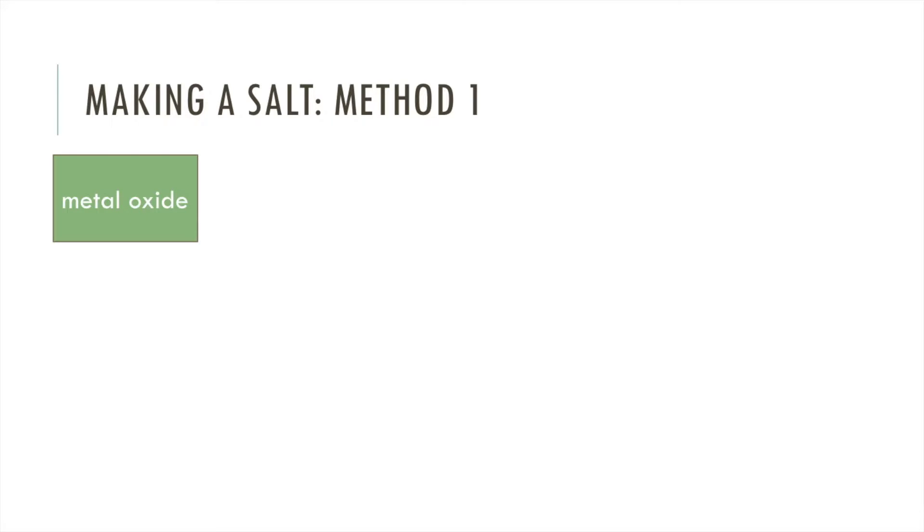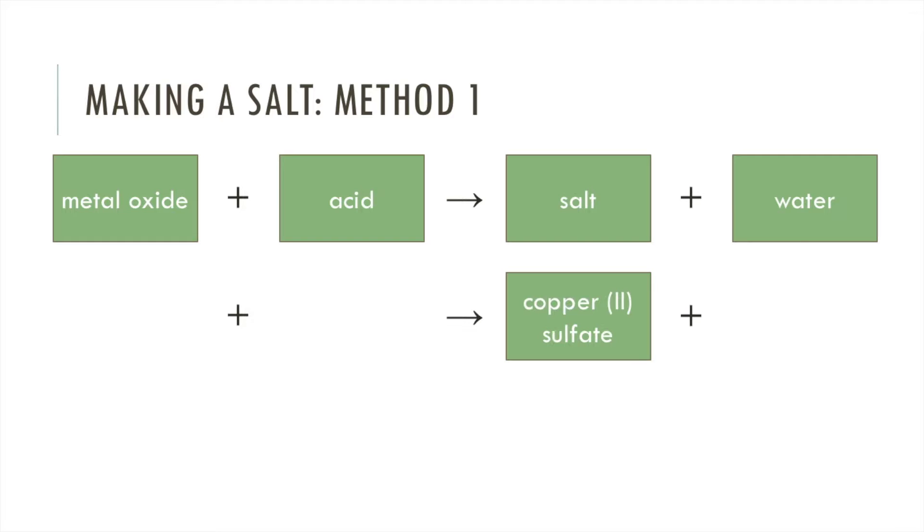The first method, you can use a metal oxide, react that with an acid, and you'll get your salt and water. So we want to make copper sulfate. Have a look at that salt and you can see the first word is copper. That gives you an indication of the metal oxide you need. The metal oxide is going to be copper oxide. Then if you look at the second half of the salt, it says sulfate. If you get a sulfate, that means the acid used must have been sulfuric acid.